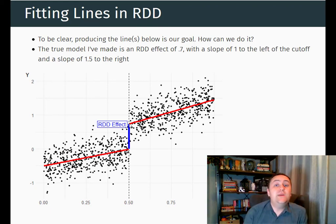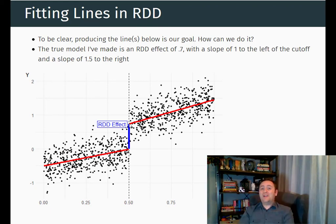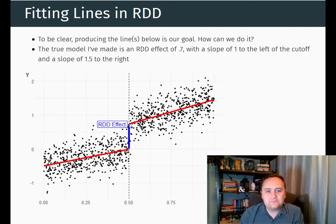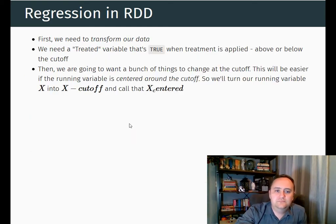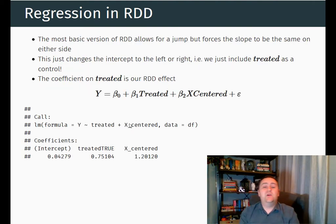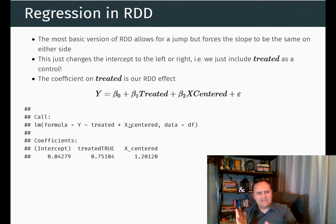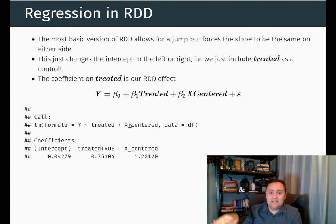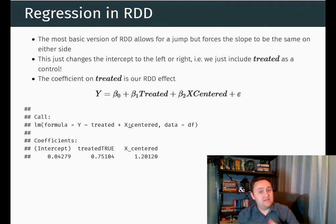And here's how we can do it using regression. Basically, all we're going to have to do is fully interact our line with whether you're above or below the cutoff. So the first step is that we're going to take our x variable and center it. This isn't actually necessary, but it does make the math interpretation a lot easier. So we're going to take that x variable — whatever our running variable is on the x-axis — and subtract out the cutoff.